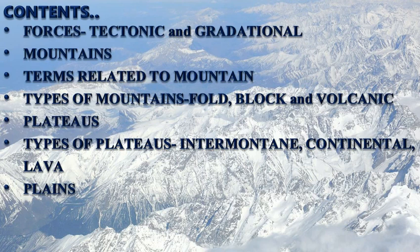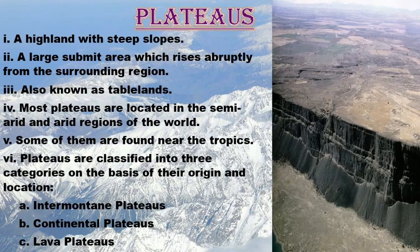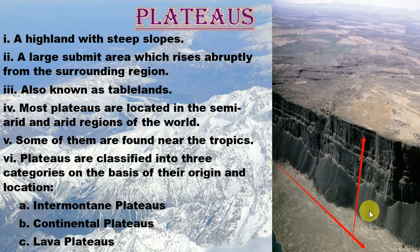Plateaus are basically highlands with steep slopes, as you can see here — the slopes are quite steep. They have a large summit area which rises abruptly from the surrounding region. As you can see, the surrounding region is quite flat and this landform has risen abruptly from it, which is why it is also known as table land.